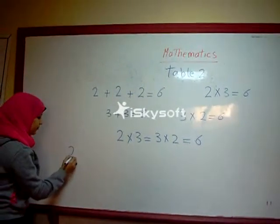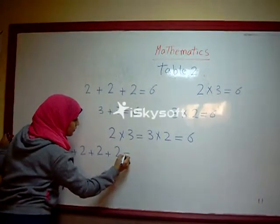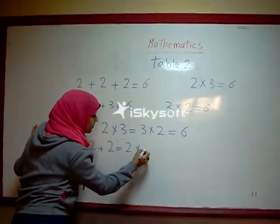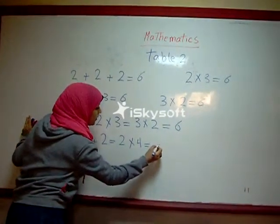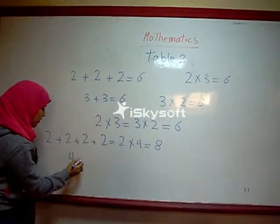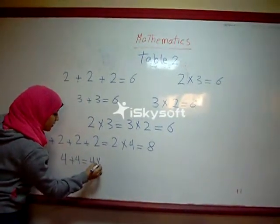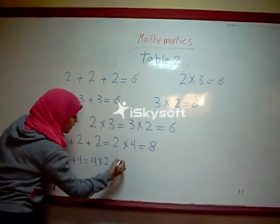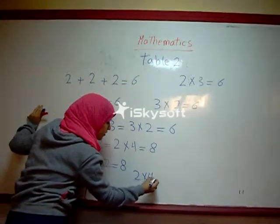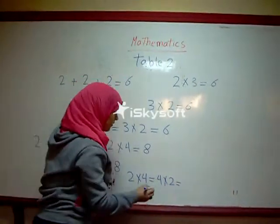Two plus two plus two plus two equals two times four equals eight. Four plus four equals four times two equals eight. Then we get two times four equals four times two equals eight.